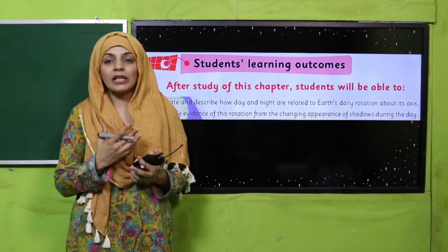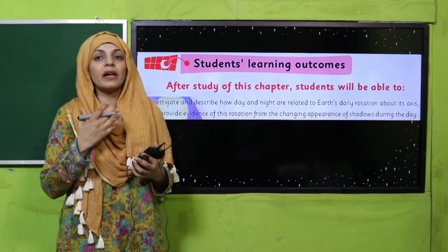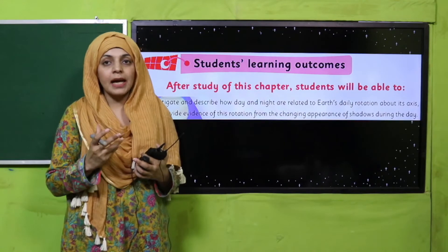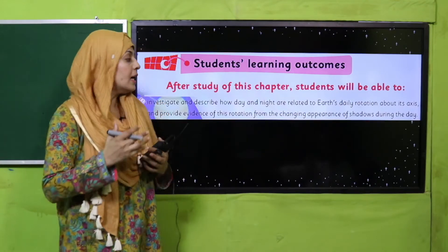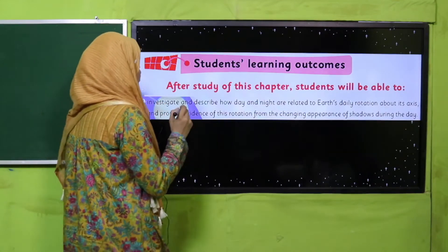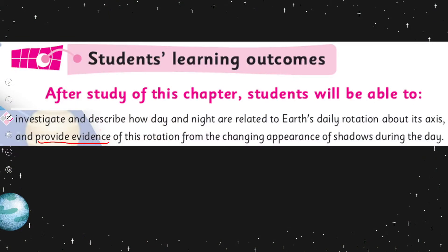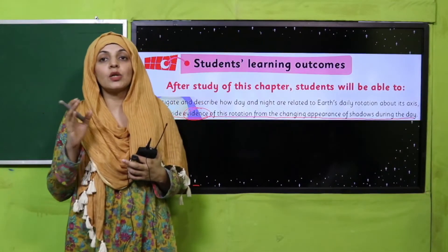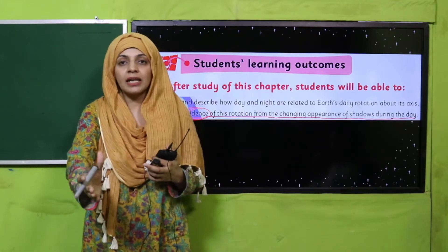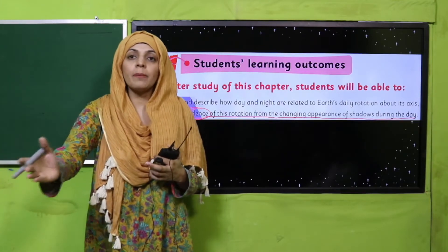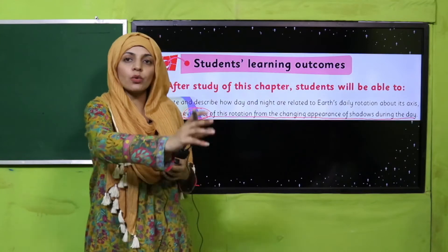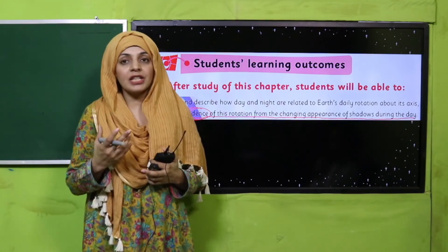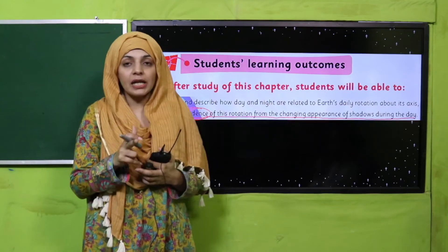Let's quickly look at the student learning outcome. Students already understand rotation and day and night formation. Today we will discuss that students will be able to provide evidence of Earth's rotation from the changing appearance of shadows during the day. The shadow's appearance changes - it gets longer or shorter, and moves to different sides throughout the day.